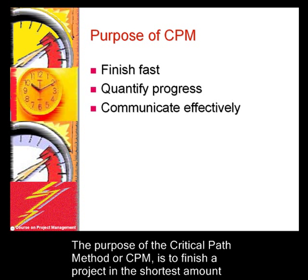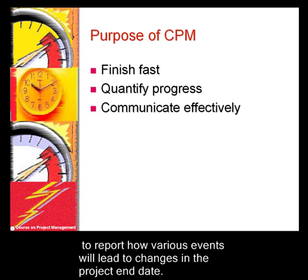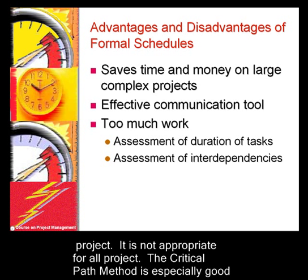The purpose of the Critical Path Method, or CPM, is to finish a project in the shortest amount of time. The CPM method allows us to quantify progress towards the project's end and to report how various events will lead to changes in the project end date. The CPM method is a formal and mathematical analysis of the shortest way of finishing a project.